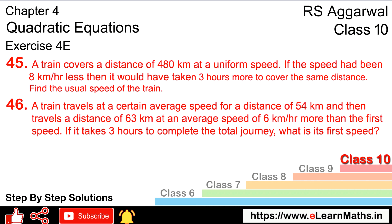Let's do question number 45 of exercise 4e, that is quadratic equations. Question number 45: a train covers a distance of 480 km at a uniform speed. If the speed had been 8 km per hour less, it would have taken 3 hours more to cover the same distance. Find the usual speed of the train.